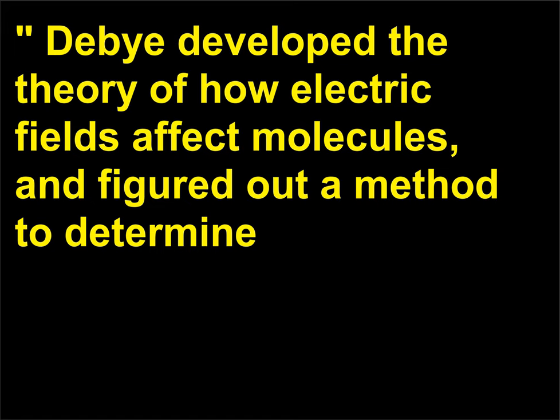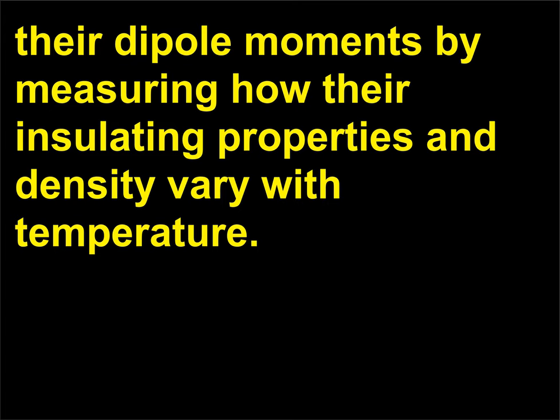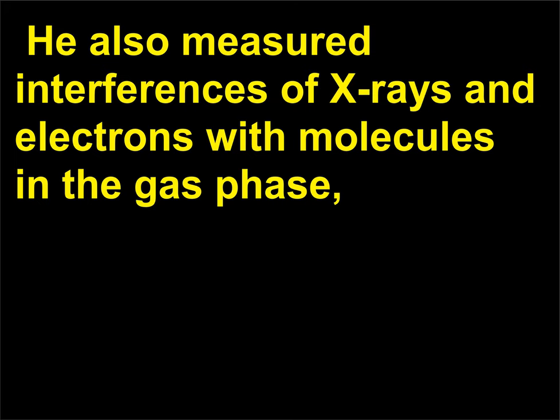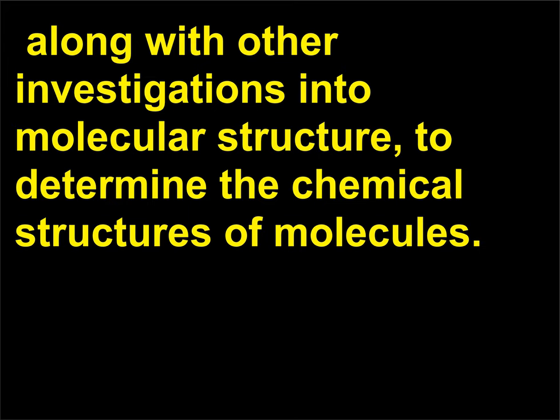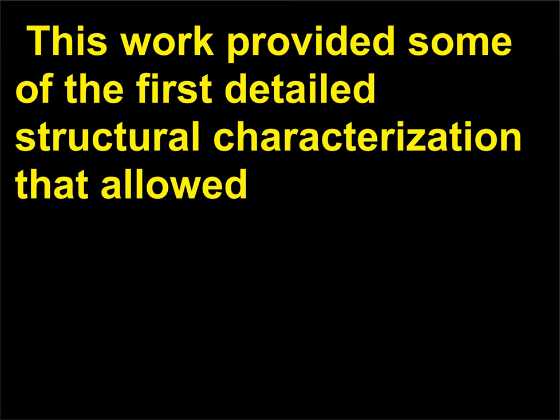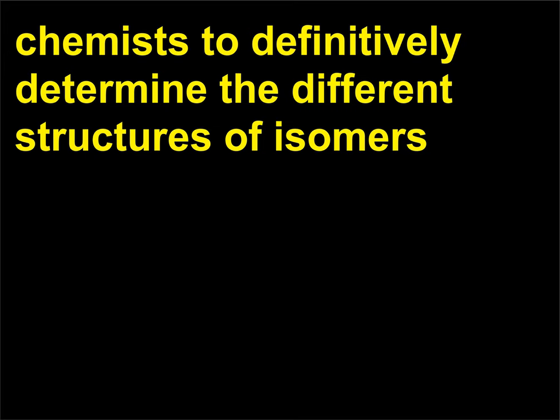Debye developed the theory of how electric fields affect molecules and figured out a method to determine their dipole moments by measuring how their insulating properties and density vary with temperature. He also measured interferences of X-rays and electrons with molecules in the gas phase, along with other investigations into molecular structure, to determine the chemical structures of molecules. This work provided some of the first detailed structural characterization that allowed chemists to definitively determine the different structures of isomers — compounds of the same chemical composition but different geometrical arrangements of the atoms.